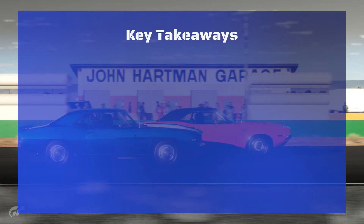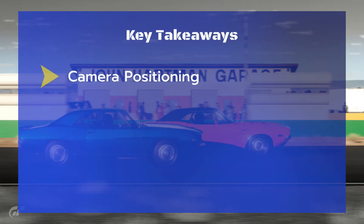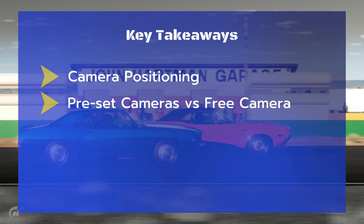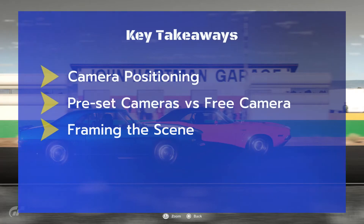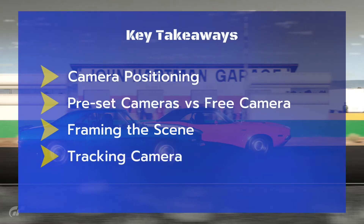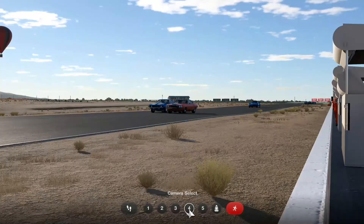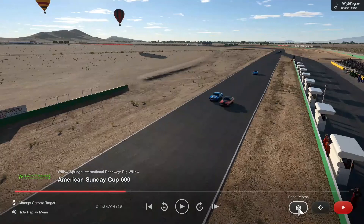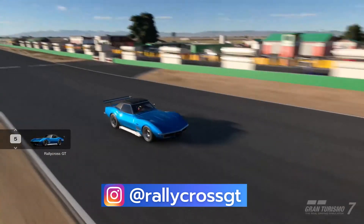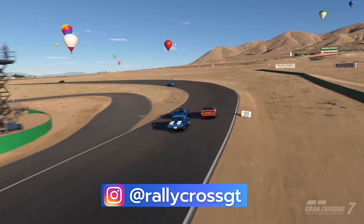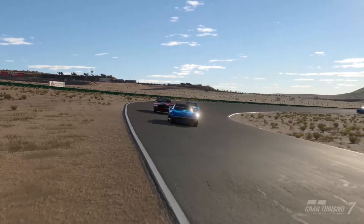Key takeaways for today: camera positioning — how close you should put the camera to the car, how to use zoom to make cars look closer or further from each other, how to use preset cameras or the free camera, how to do your framing to make the photo more dynamic and give a sense of movement. We also looked at tracking, which is quite important depending on your scene. And last but not least, some special effects. Please let me know in the comments if the tips were useful and if you would have done something different with these shots. I'd love to see your photos on Instagram — tag me at RallycrossGT so I can see the photos you've taken using these tips. Thanks a lot for watching and see you next time.